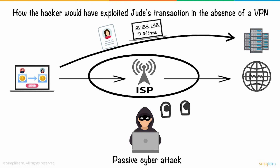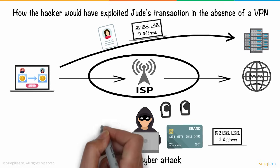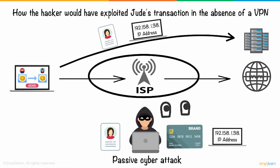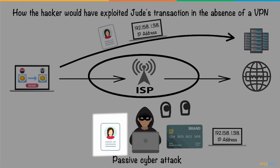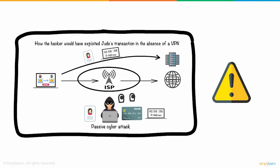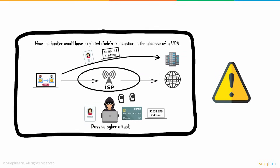This is a passive cyber attack where the hacker collects Jude's bank details without being detected. More often than not, in such an attack, payment information is likely to be stolen. The targeted data are the victim's username, passwords, and other personal information. Such an unsecured connection exposed Jude's IP address and bank details to the hacker when it passed through the public network.